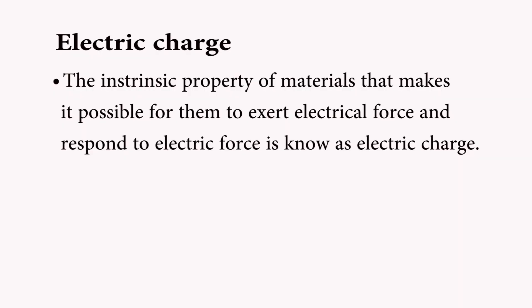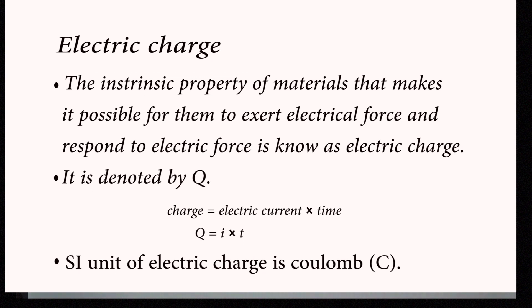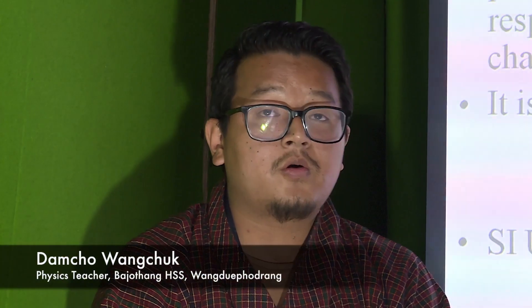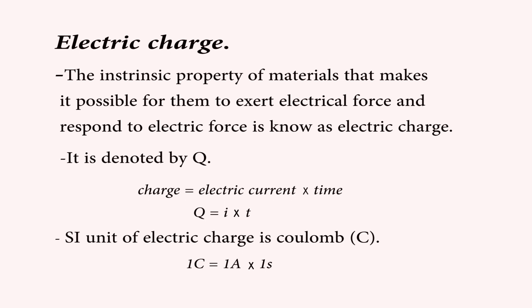So what is electric charge? The intrinsic property of materials that makes it possible for them to exert electrical force in response to electric force is known as electric charge. It is denoted mostly by capital Q, where electric charge is the product of electric current and time: Q equals I times T. The SI unit of electric charge is Coulomb, denoted by capital C. Therefore, one Coulomb equals one ampere times one second. It is a scalar quantity.